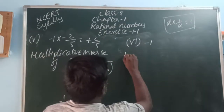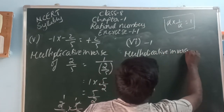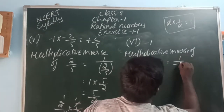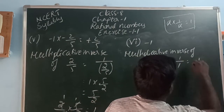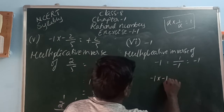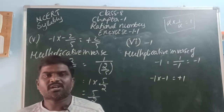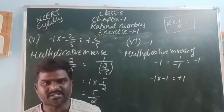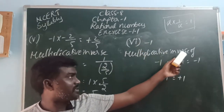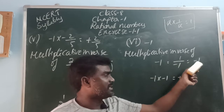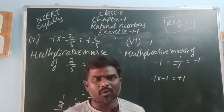Multiplicative inverse of minus 1 is 1 by minus 1. Plus by minus is minus, so 1 by 1 is 1, giving minus 1. So minus 1 into minus 1: minus times minus is plus, 1 times 1 is 1 — giving 1. The numbers whose multiplicative inverse is the same as themselves are 1 and minus 1. For 1: 1 into 1 is 1. For minus 1: its multiplicative inverse is 1 by minus 1, which equals minus 1.